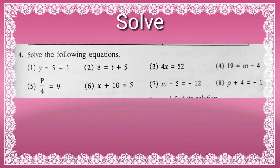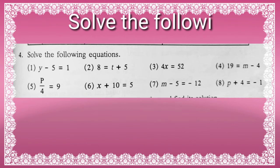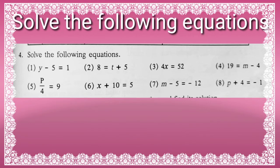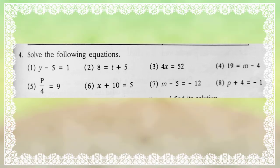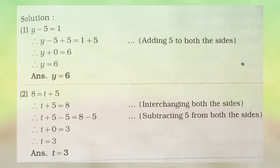Let us see the next question: Solve the following equations. Here 8 questions are given. The first one is y minus 5 is equal to 1. The number with the variable — we will do the opposite operation with the same number. So for y minus 5 is equal to 1, we will add 5 to both the sides. Adding 5 to both the sides, the answer will be y plus 0 is equal to 6, which means y is equal to 6.